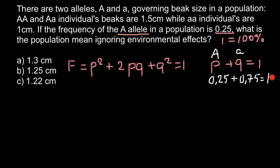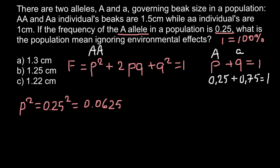Now we have everything we need to solve this problem. To find the frequency of the homozygous dominant genotype, P² stands for that genotype. So P² equals 0.25 squared, and the answer is 0.0625. This is the frequency of the homozygous dominant genotype.